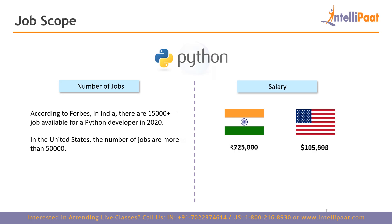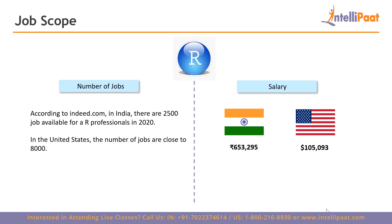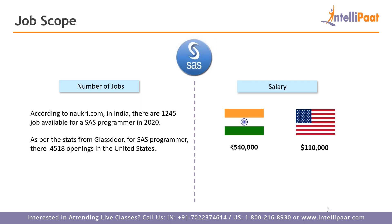For R programming: according to Indeed.com, in India there are 2,500 jobs available for R professionals in 2020, and in the United States the number is close to 8,000. The average salary for an R professional in India is close to ₹6,53,000 per year, and in the United States it is close to $1,15,000 per year.